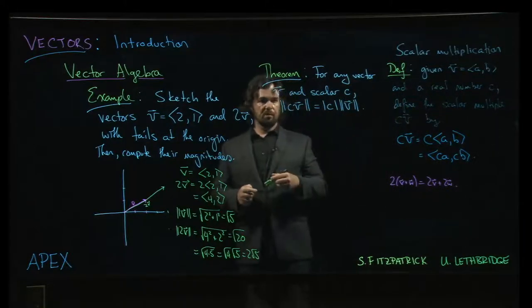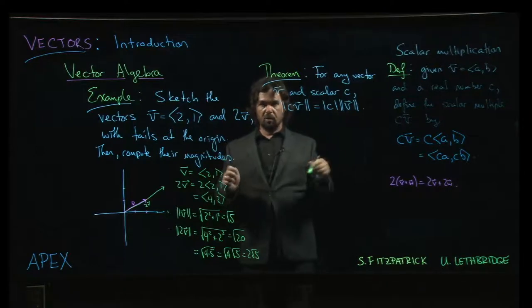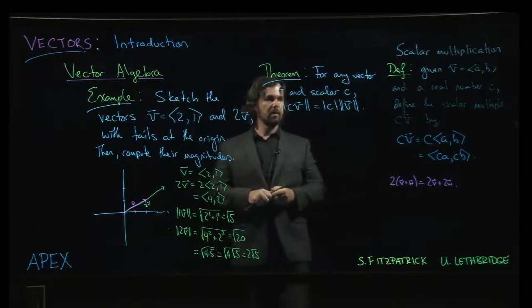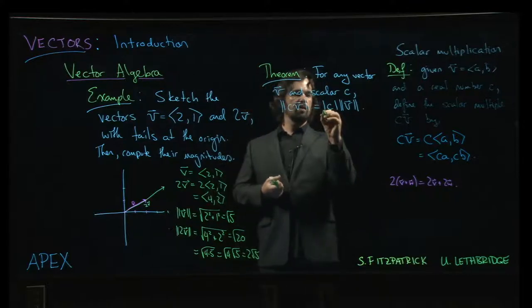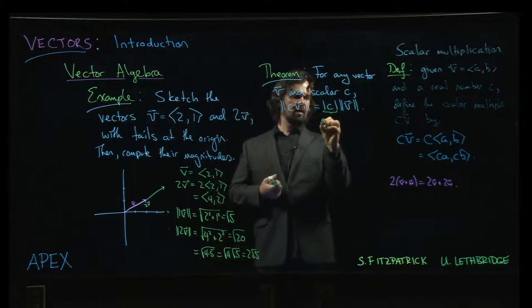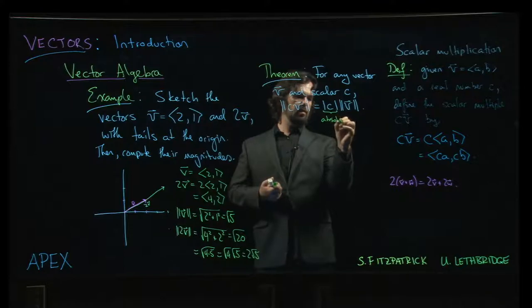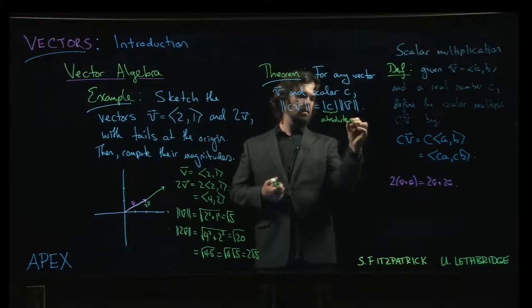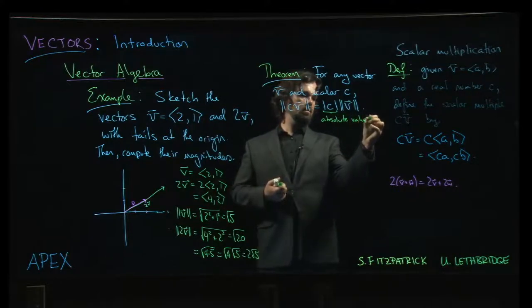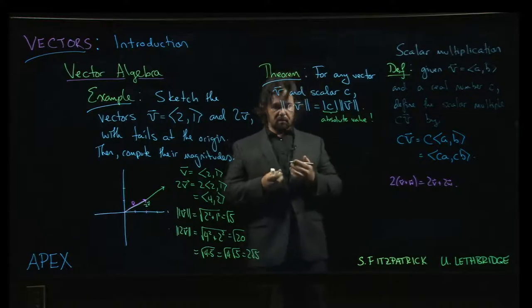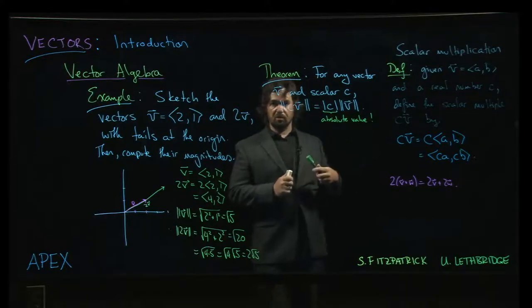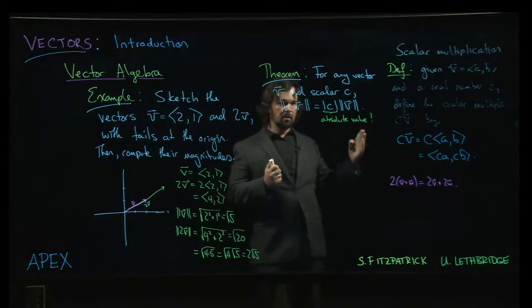Okay, so this is an important result, so I want to actually show you why it's true. It's listed as one of the properties in the textbook. I'm going to point out, this here, that's actually absolute value. And this theorem really tells you why scalar multiplication should be called scalar multiplication, because it scales the vector.